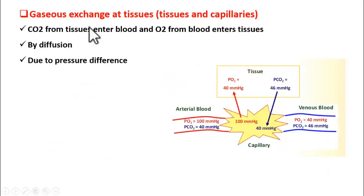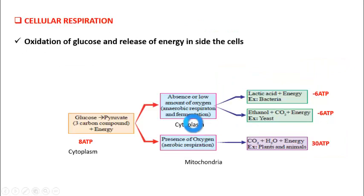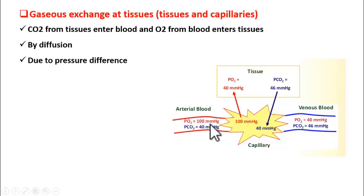The next event in respiration is gaseous exchange at tissues. Blood coming from the lungs (arterial blood) brings oxygen to the tissues, but it also contains some carbon dioxide. The tissues contain carbon dioxide and oxygen too. The pressure of carbon dioxide in tissues is 46 mmHg and oxygen is 40 mmHg, while in blood oxygen pressure is 100 mmHg and carbon dioxide is 40 mmHg. So oxygen enters from blood into tissues, and carbon dioxide enters from tissues into blood.